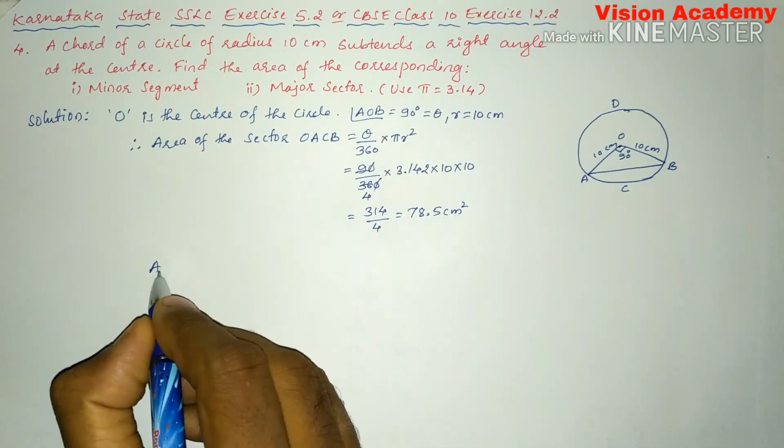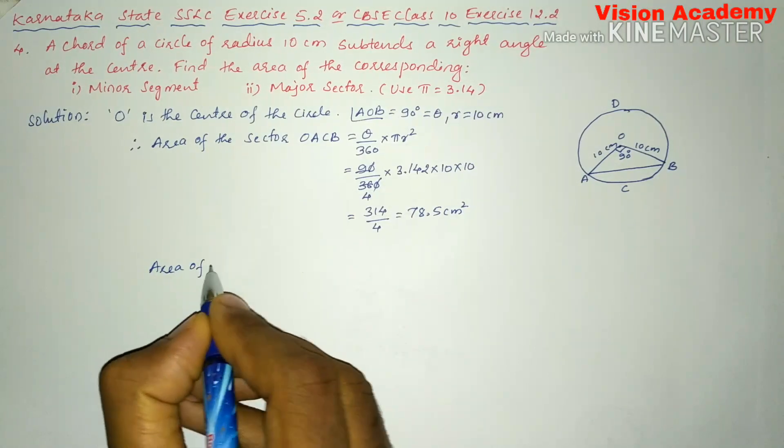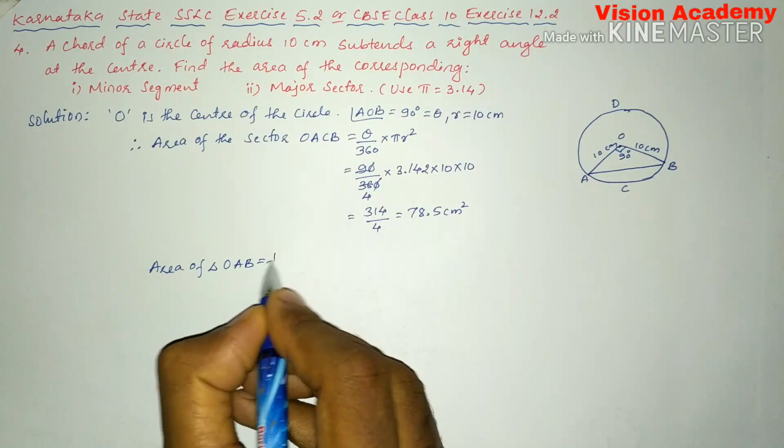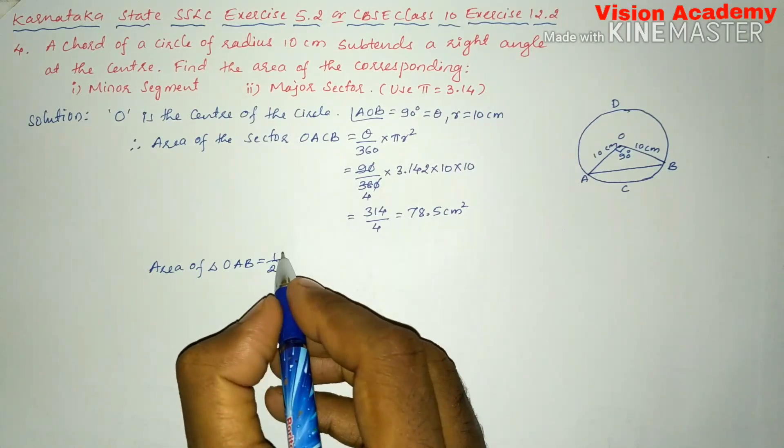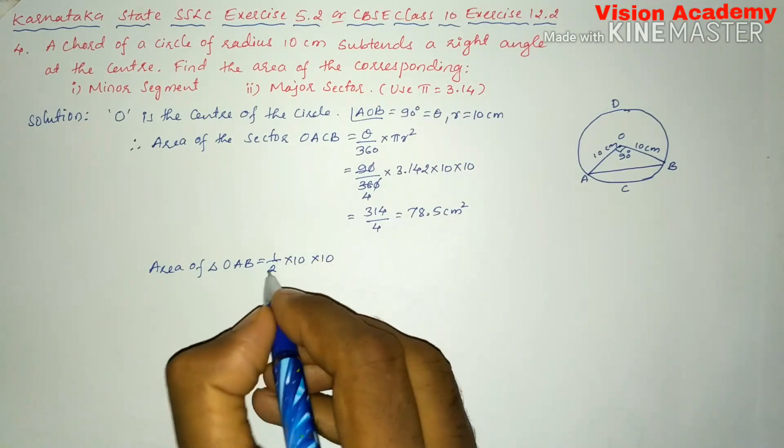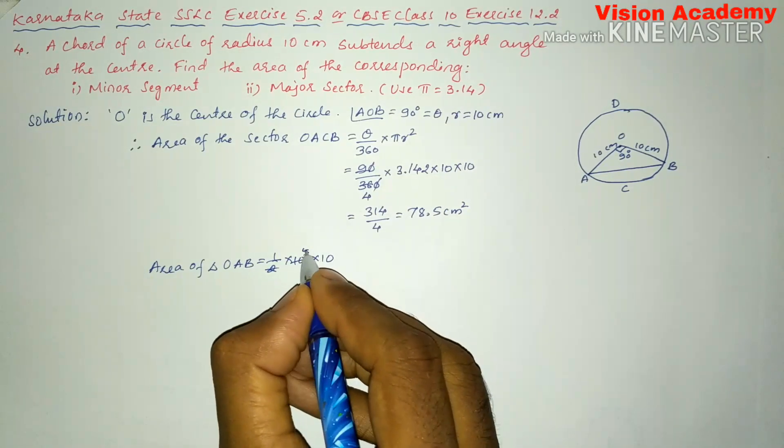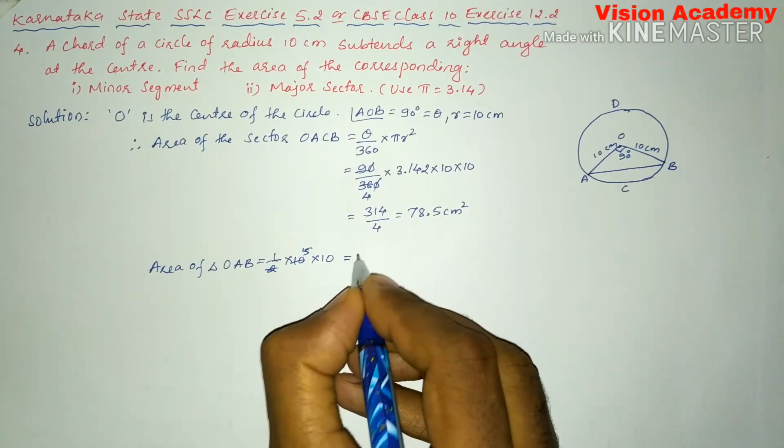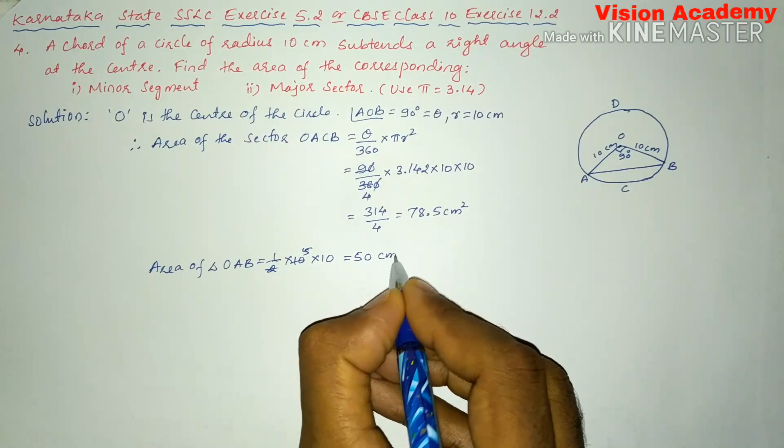Now we'll write area of triangle OAB is equal to 1 by 2 into base is 10, height is 10. So that is 5 tens are 50 centimeter square.